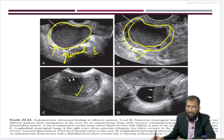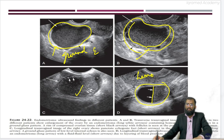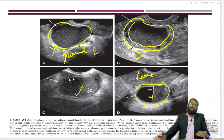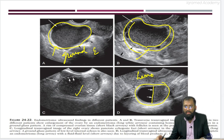Here you see a special sign — you can see there is a fluid-fluid level. That is basically the hematocrit effect because of layering of the blood. Whenever you see layering of the blood, that means the blood has settled down — RBCs have settled down and separated from plasma. That is one of the important signs that the cyst is blood-containing.